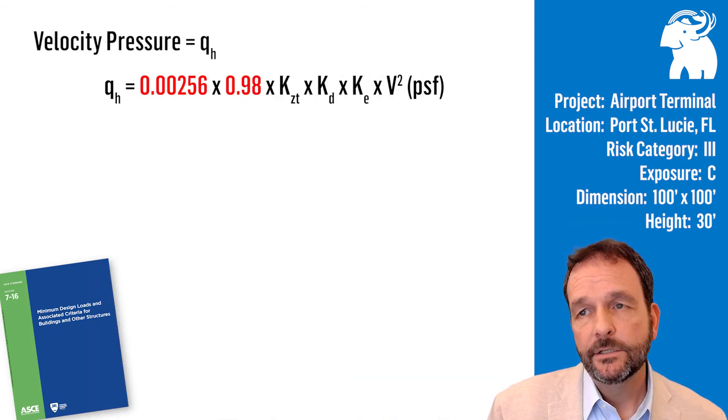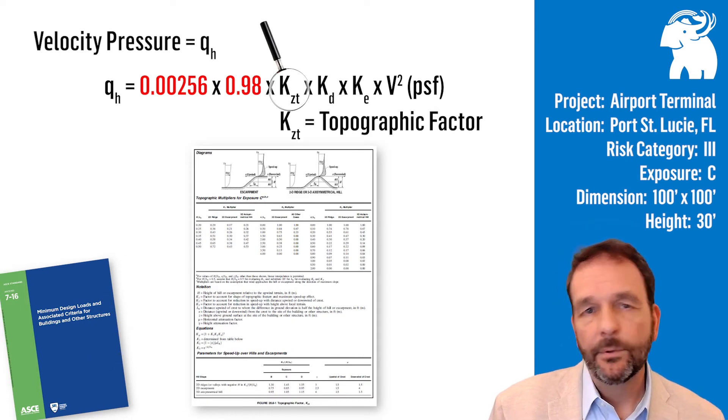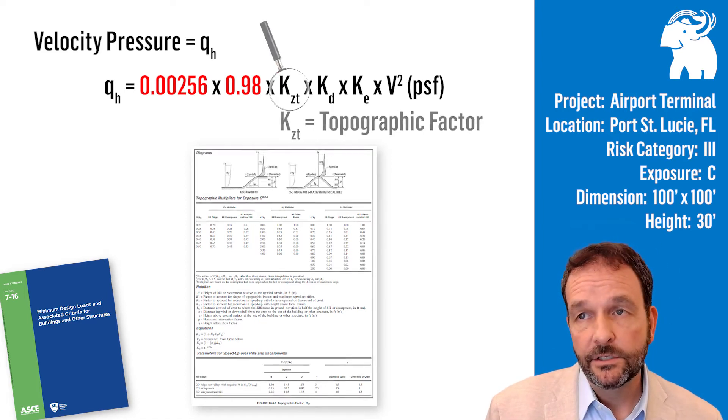The next variable is K sub ZT, a topographic factor. In our example, we're surrounded by uniform terrain, and since our building is not located on a hill or escarpment, the K sub ZT is simply 1.0.